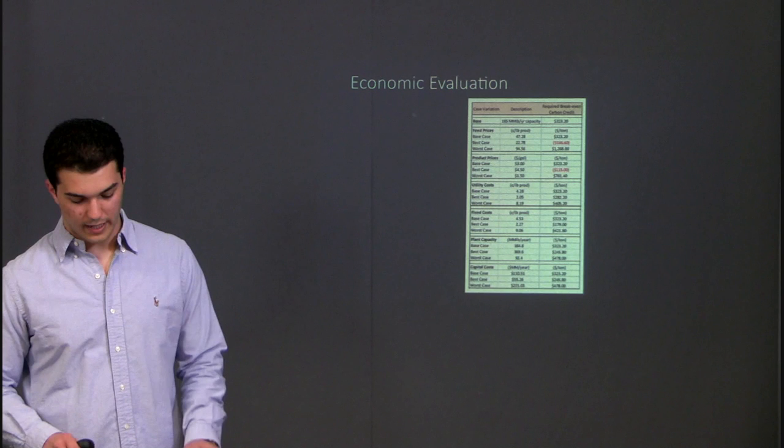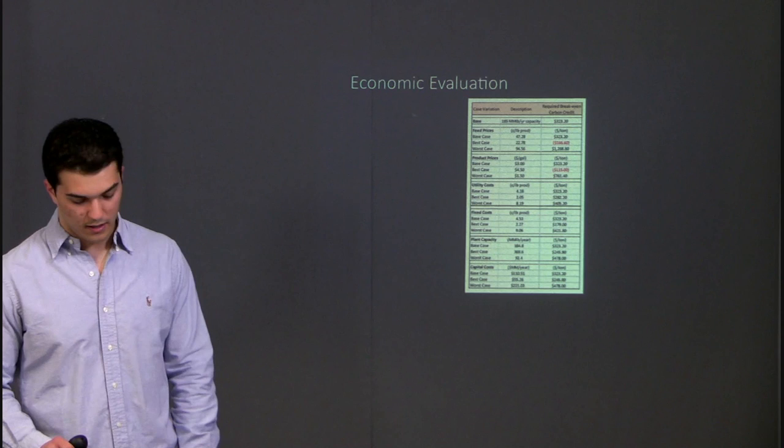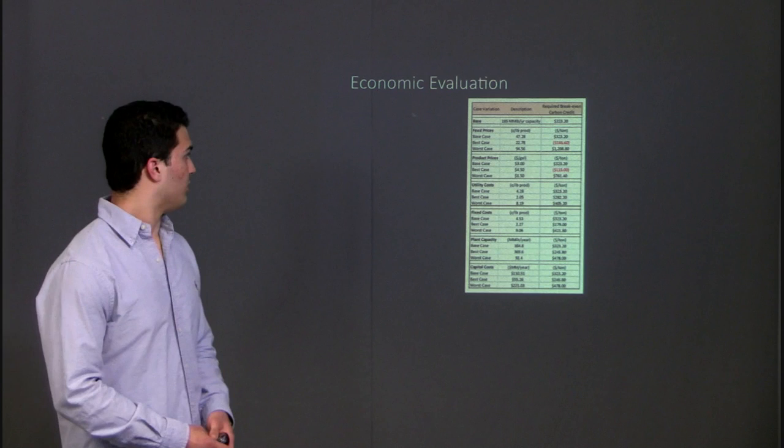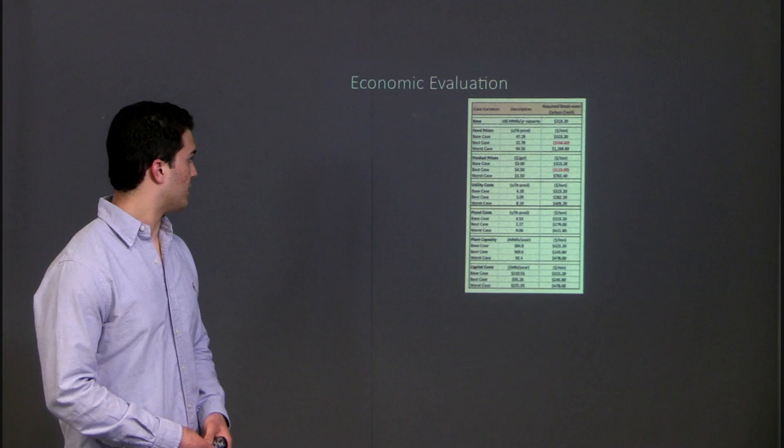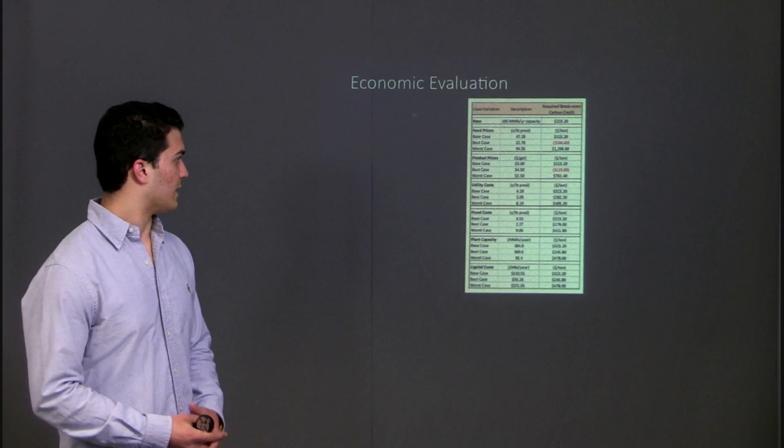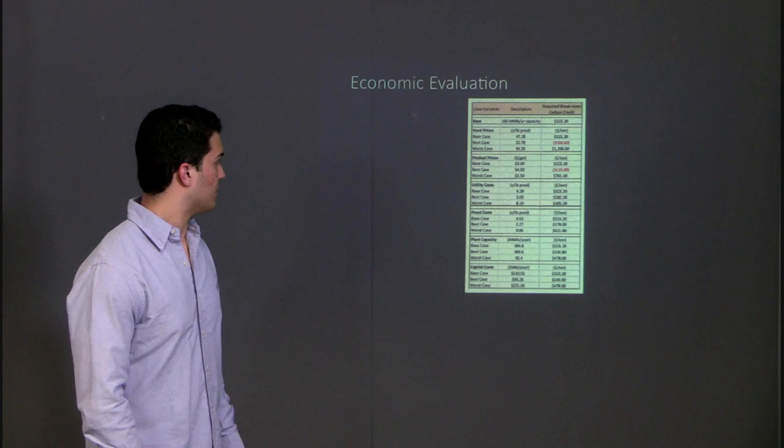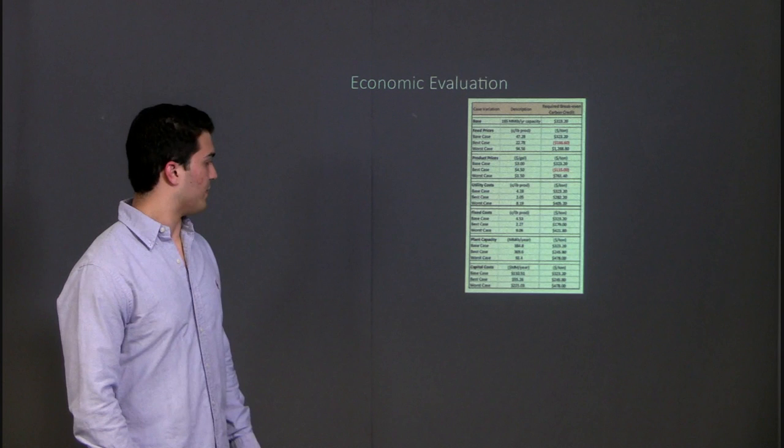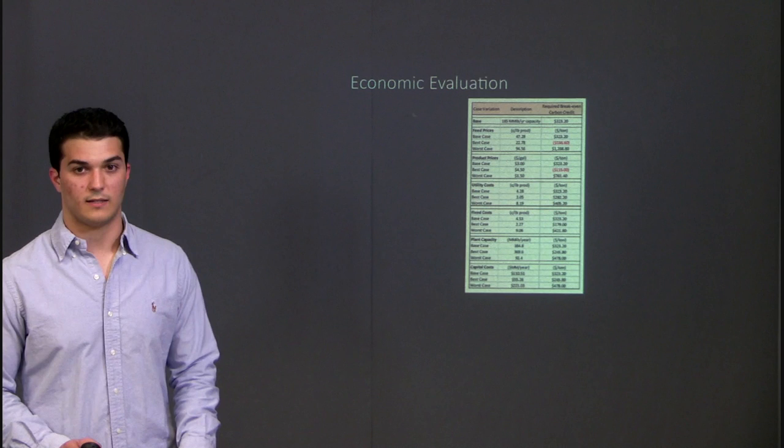So to build off this idea, we ran several sensitivity studies that showed the degree of risk associated with these six cost variables shown below. Basically, how the sensitivity study was conducted, we created a base case, and then for each category, for feed prices, product prices, utility costs, fixed costs, plant capacity, and capital costs, we created a best case scenario and a worst case scenario to look at the spread between the necessary carbon credit. And as you can see with the two first categories of feed prices and product prices, the variance between the best case and the worst case is relatively large compared to the rest of them, indicating that this process is very price sensitive to both the price of jet fuel and the price of sugarcane.